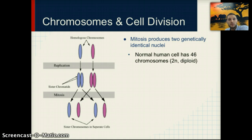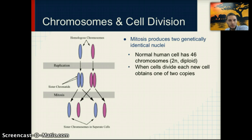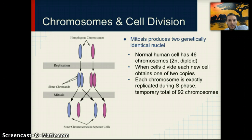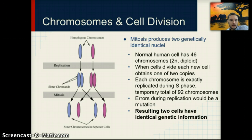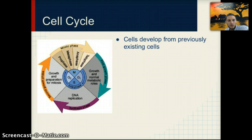A normal human cell has 46 chromosomes, which we describe as 2N or diploid — meaning it has two copies. When cells divide, each new cell obtains one of the two copies. Each chromosome is exactly replicated during the S phase of interphase, so there are temporarily 92 chromosomes before the cell divides through mitosis. Mistakes during DNA replication are considered mutations, but after completion of the cell cycle the cells will have identical genetic information.